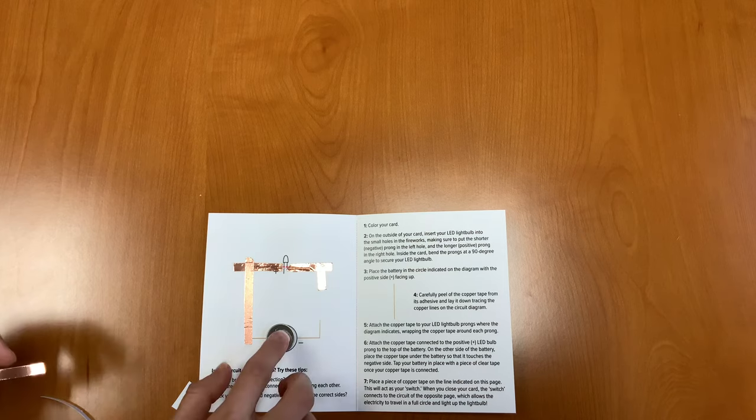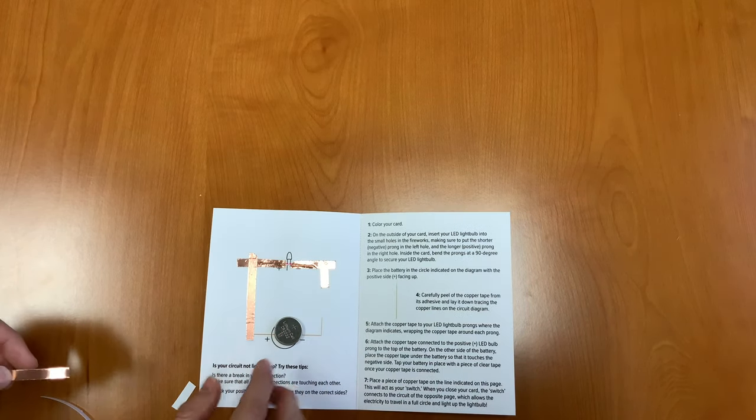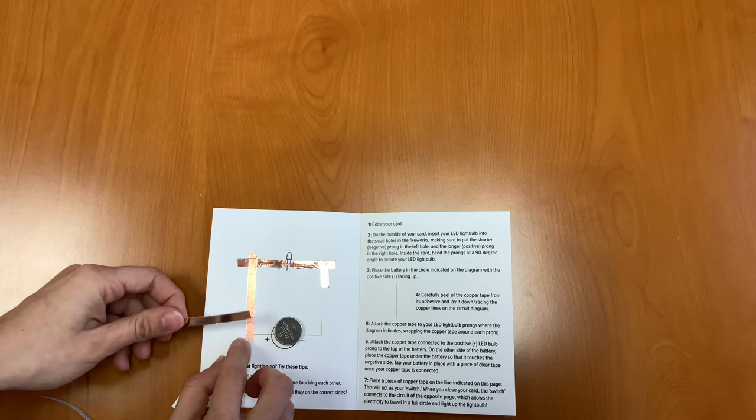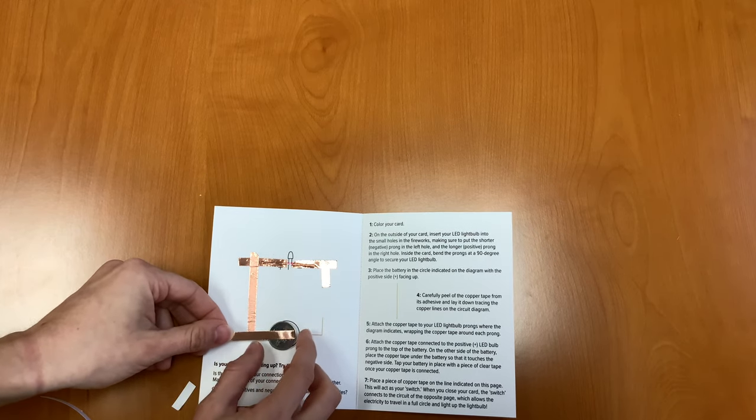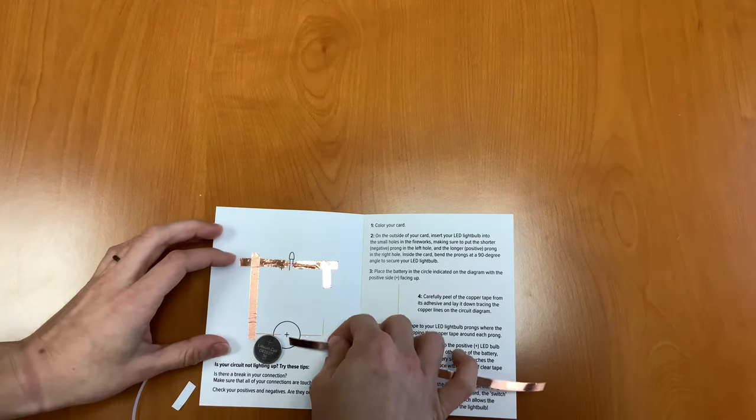Now the way that we're going to attach the copper tape to your battery is we're going to attach the copper tape from here to the top of your battery on the left hand side. And on the right hand side, we're going to attach it underneath.